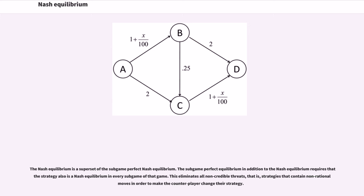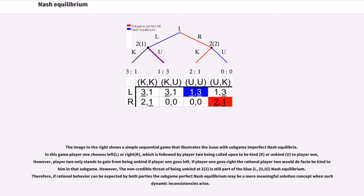The Nash equilibrium is a superset of the sub-game perfect Nash equilibrium. The sub-game perfect equilibrium, in addition to the Nash equilibrium, requires that the strategy also is a Nash equilibrium in every sub-game of that game. This eliminates all non-credible threats, that is, strategies that contain non-rational moves in order to make the counter-player change their strategy. A simple sequential game illustrates the issue with sub-game imperfect Nash equilibria. In this game, player one chooses left or right, which is followed by player two being called upon to be kind or unkind to player one. However, player two only stands to gain from being unkind if player one goes left. If player one goes right, the rational player two would de facto be kind to him in that sub-game. However, the non-credible threat of being unkind is still part of the Nash equilibrium. Therefore, if rational behavior can be expected by both parties, the sub-game perfect Nash equilibrium may be a more meaningful solution concept when such dynamic inconsistencies arise.